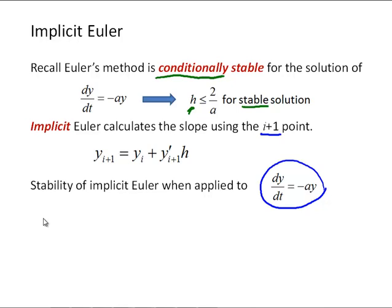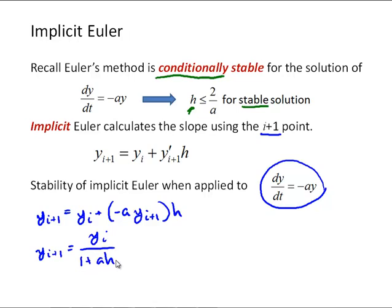So if we do that we get y_{i+1} is equal to y_i plus negative a times y_{i+1} times h, or y_{i+1} is equal to y_i over 1 plus a times h.